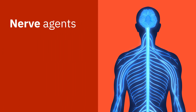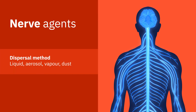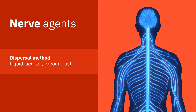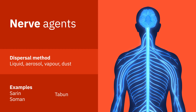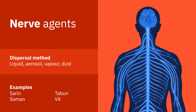Nerve agents affect the peripheral and central nervous system, leading to hyper-stimulation of muscles, glands and other nerves. They are highly toxic with rapid effects and act primarily by absorption through the skin and lungs.